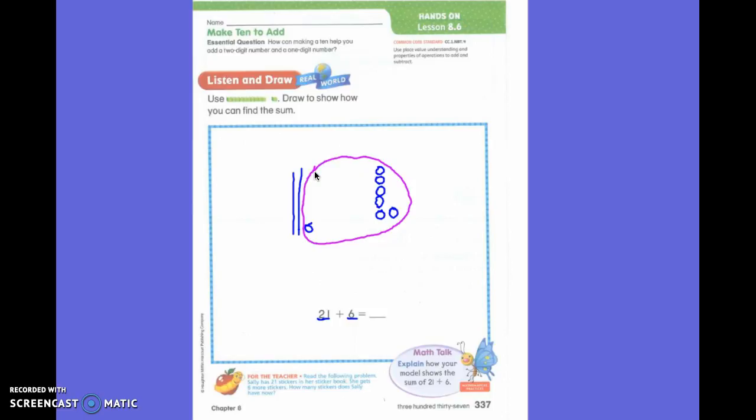But what do I have to count first? My tens place. So let's count those together. Ten, twenty, twenty-one, twenty-two, twenty-three, twenty-four, twenty-five, twenty-six, twenty-seven.